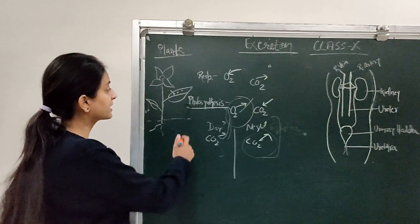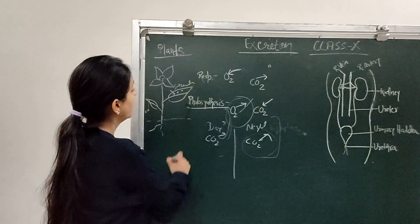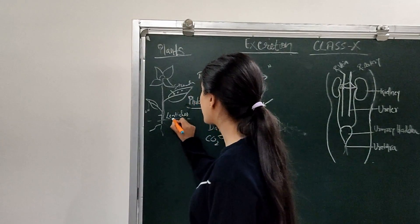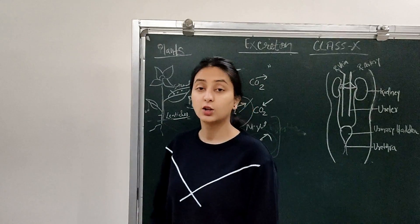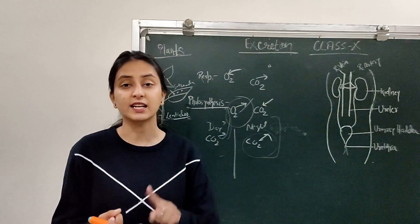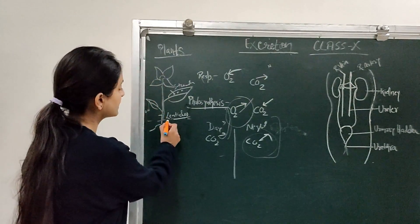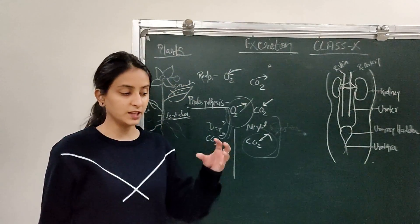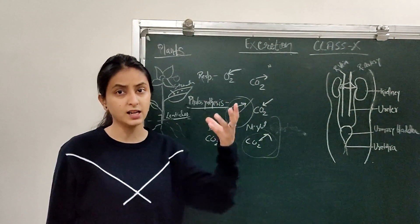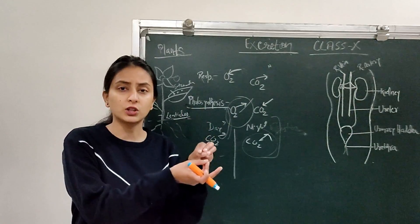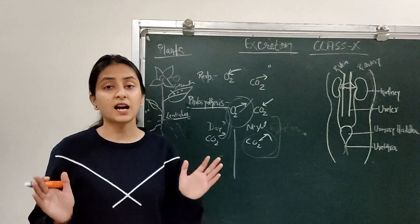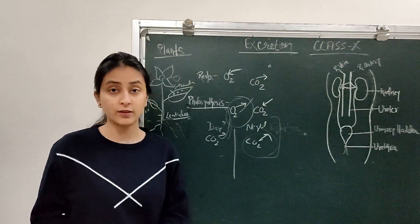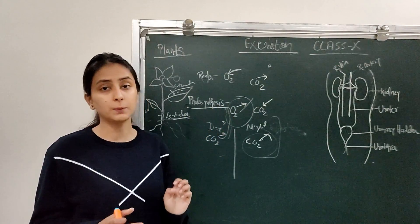This waste product is released from leaves through stomata. In the stem, structures called lenticels help release waste products from the stem part of the plant. So waste products are released via stomata in leaves and lenticels in the stem. Some waste products are also released into the soil. Additionally, plants store some waste products in their leaves or fruits, and when leaves are shed or fruits fall, those waste products are also released from the plant.